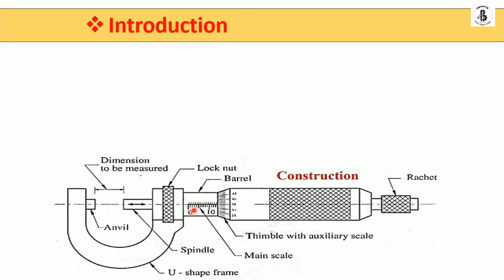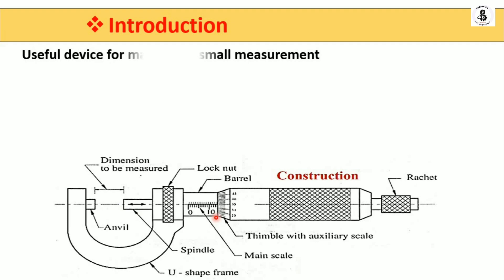The spindle is directly connected with the barrel. On the barrel there are main scale graduations. The barrel is interconnected with a thimble having an auxiliary scale — a cylindrical auxiliary scale. On the other side there is the ratchet, which provides constant pressure during measurements. After adjusting the anvil and spindle to the shape and size of the job, the lock nut is used for locking at the extreme position, and then the reading is taken.